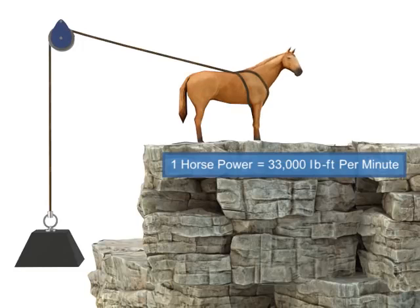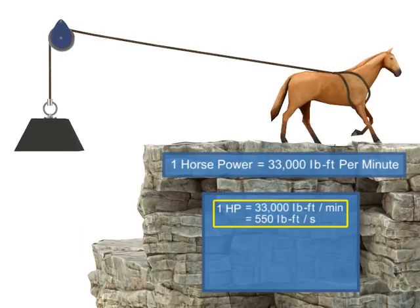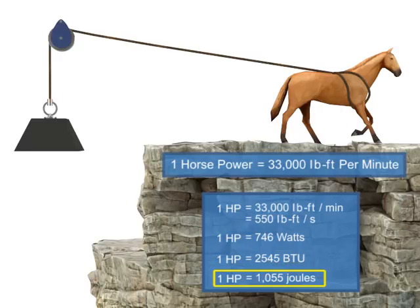In modern terms, horsepower is simply another unit of measurement for power and can be translated into watts, BTUs, joules, or any unit of power. Units that measure motor power are typically in horsepower or watts.